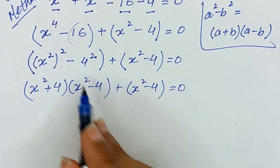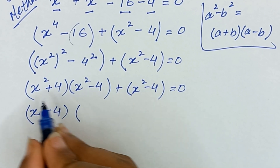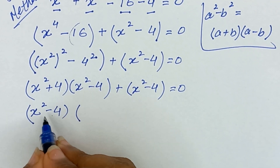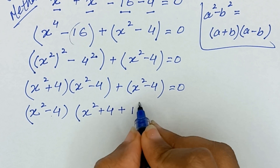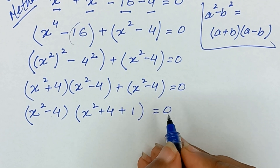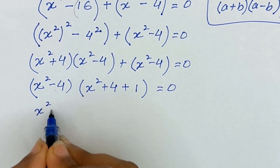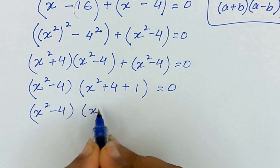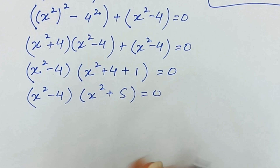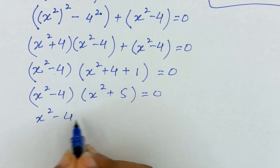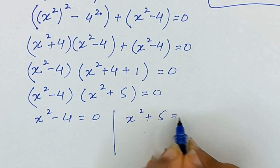From these two terms we have x squared minus 4 as common, so we take x squared minus 4 as a common factor. This term divided by that gives x squared plus 4, and the second term divided by that gives 1, so it becomes x squared minus 4 times x squared plus 5 equal to 0. Now we have two solutions: x squared minus 4 equals 0, and x squared plus 5 equals 0.